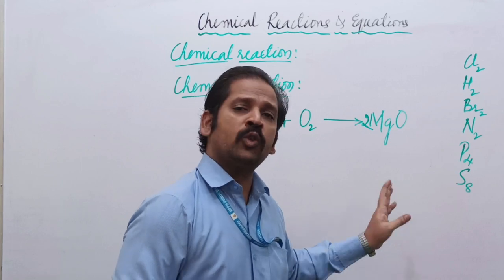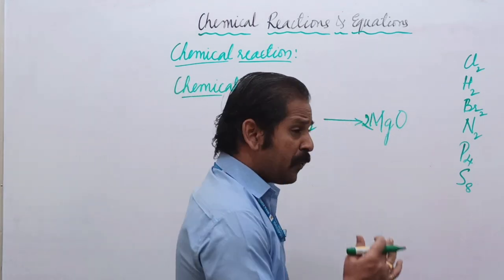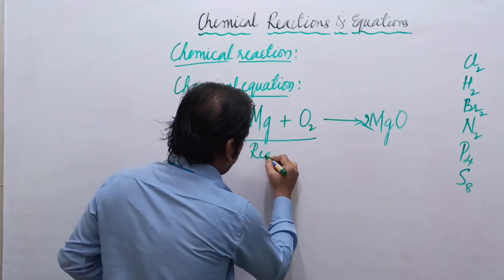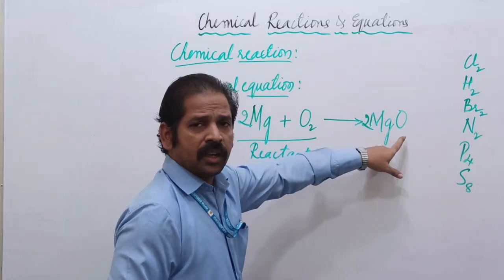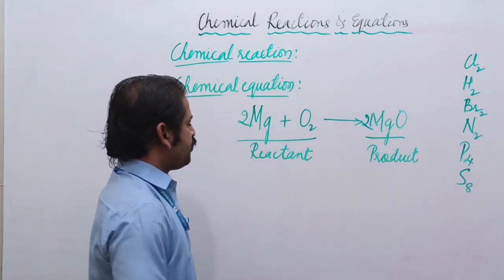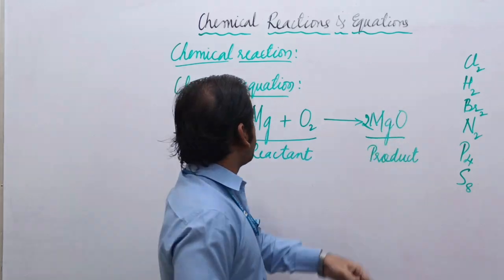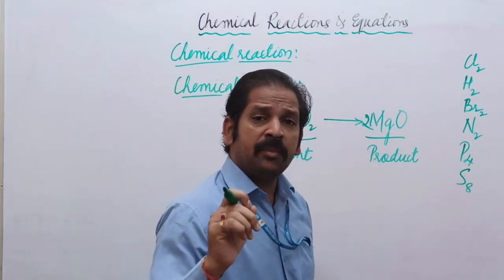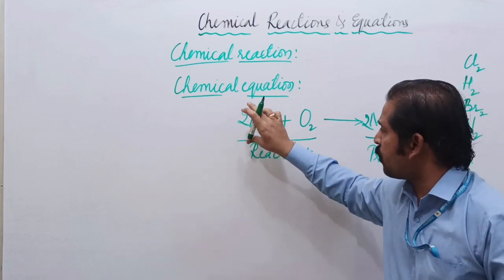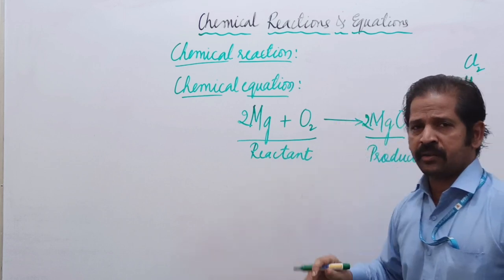Magnesium reacts with oxygen to form magnesium oxide. Before the arrow mark, these two elements are called reactants, and this chemical is called the product. In a chemical equation, both reactants and product are present — it is a symbolic representation. Writing it in equation form: 2Mg + O2 → 2MgO. This is the shortest form, called a chemical equation.